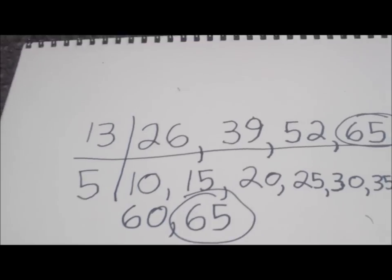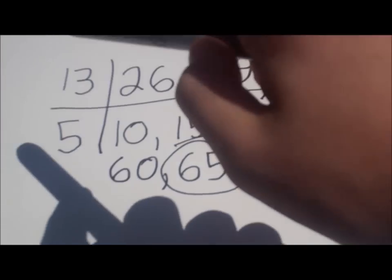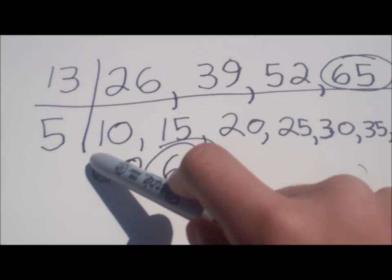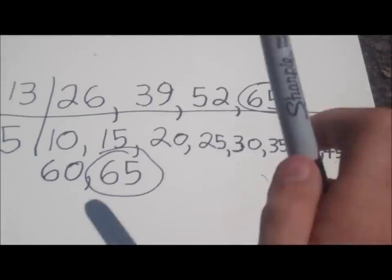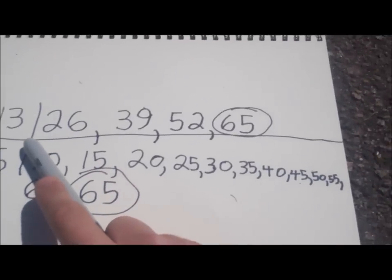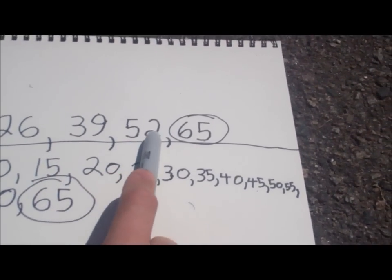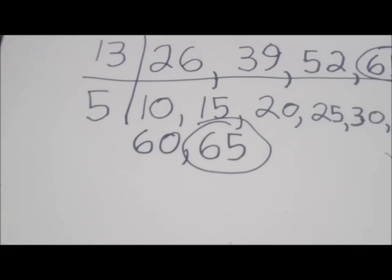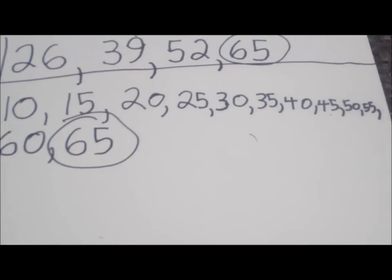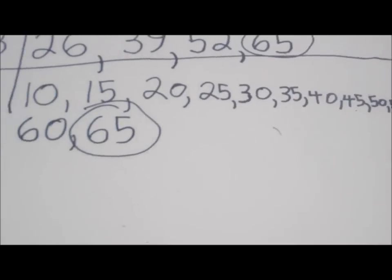Next, I'm going to be telling you the least common multiple of 13 and 5. The least common multiple of 13 and 5 is 65. For 13 I went 13, 26, 39, 52, 65. And for 5 I got 5, 10, 15, 20, 25, 30, 35, 40, 45, 50, 55, 60, 65.